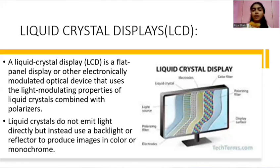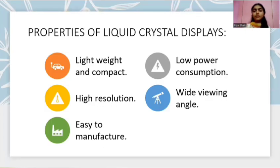Liquid crystal displays, also called LCDs. A liquid crystal display is a flat panel display or other electronically modulated optical device that uses the light modulating properties of liquid crystals combined with polarizers. Liquid crystals do not emit light directly but instead use a backlight or reflector to produce images in color or monochrome. Properties of LCDs: they are lightweight and compact, have high resolution, are easy to manufacture, have low power consumption, and have a wide viewing angle.